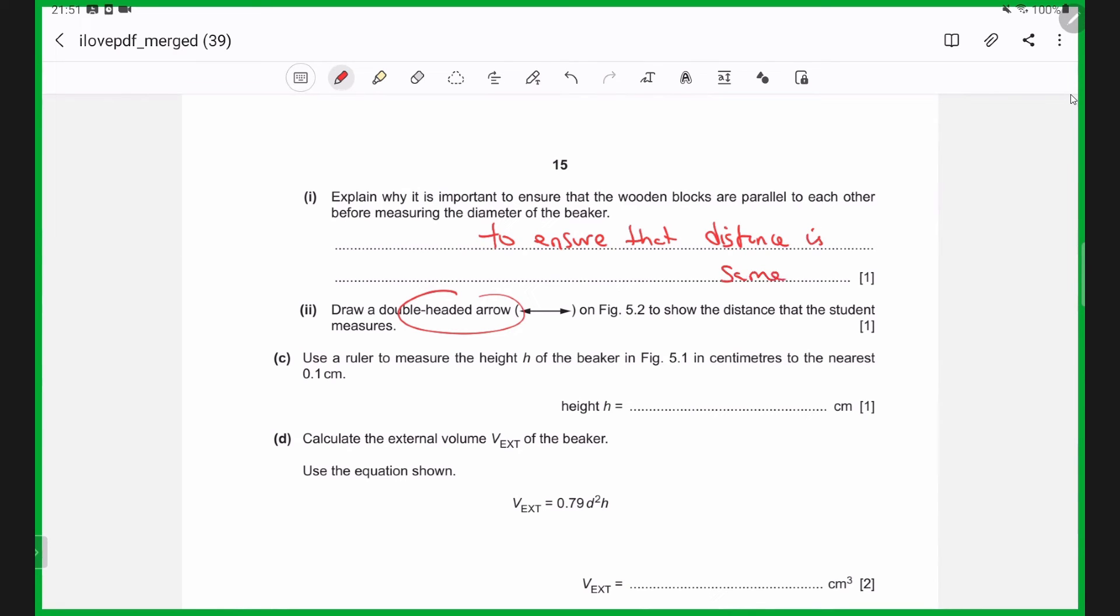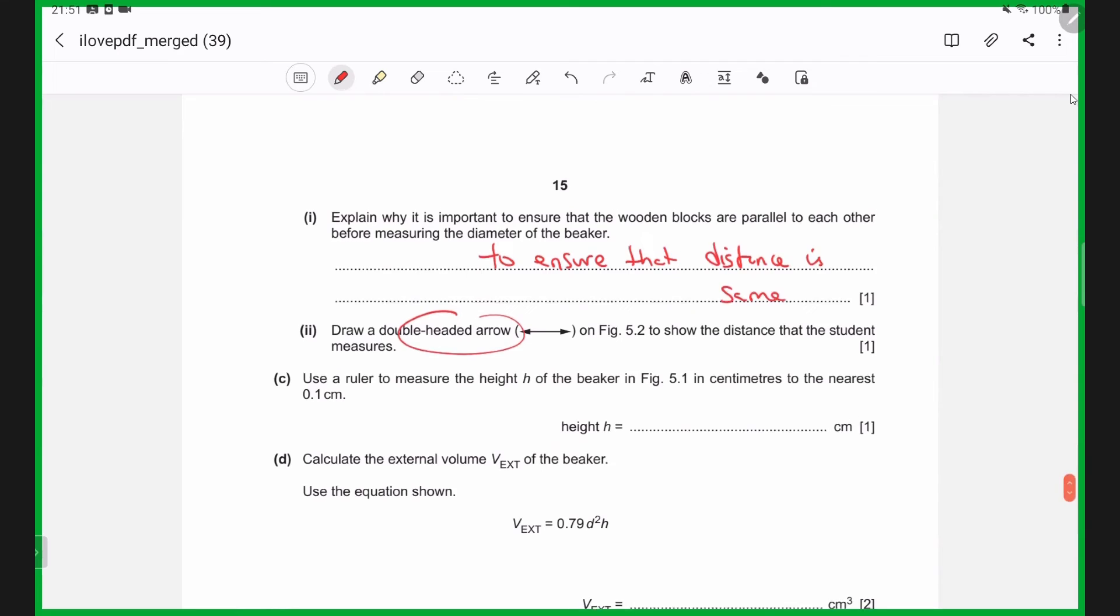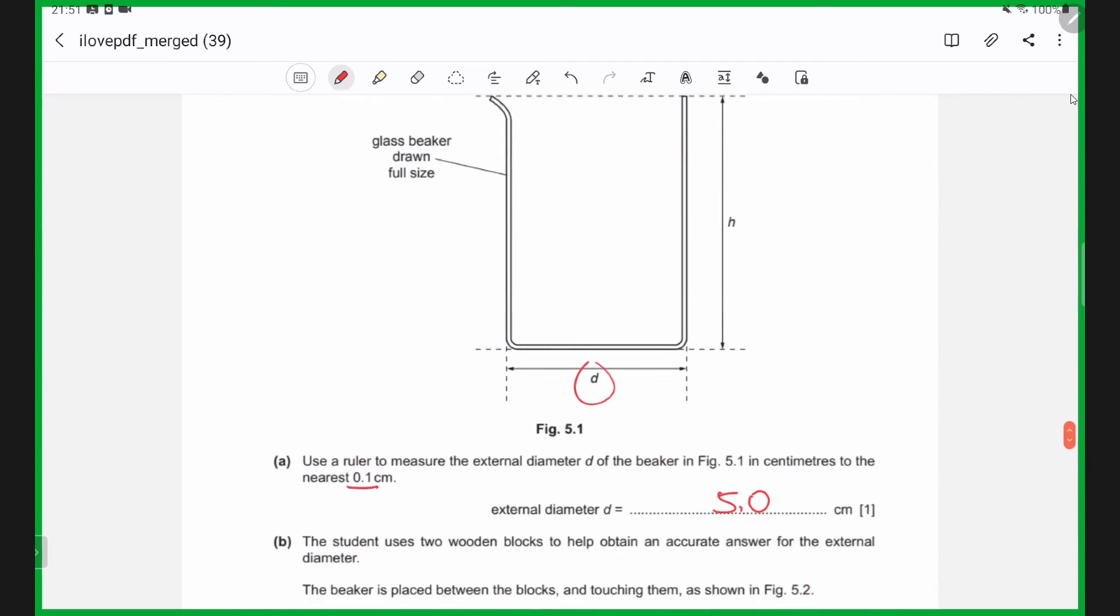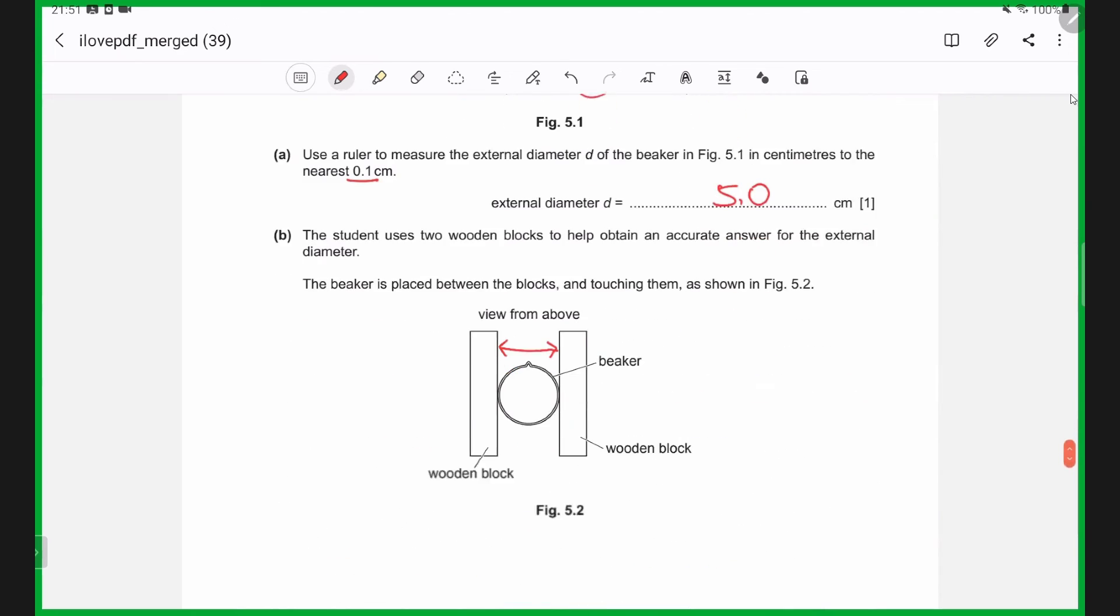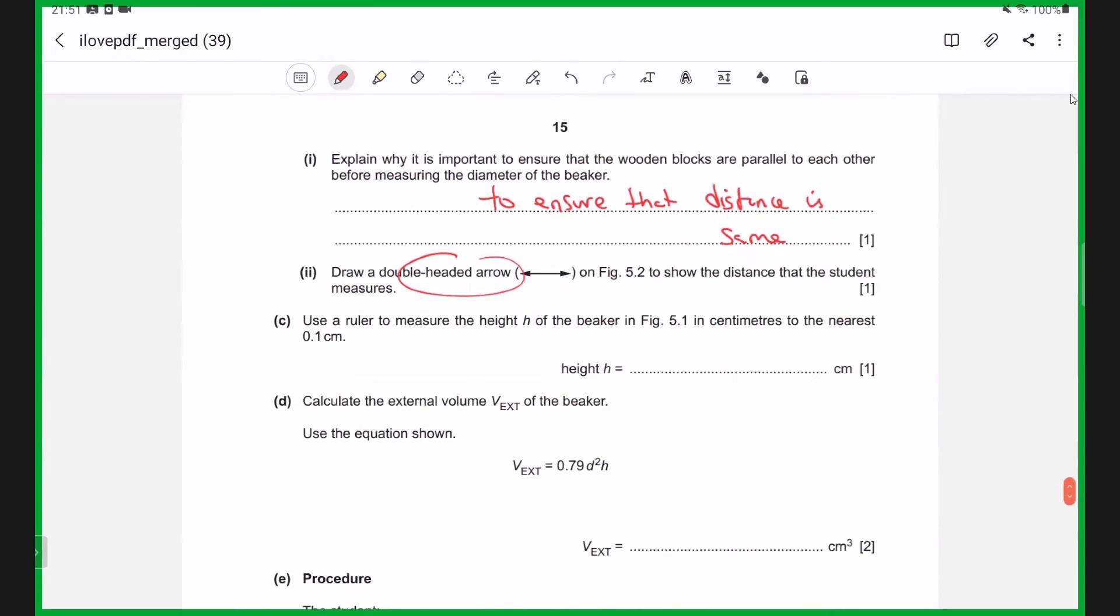And the height, of course, we're going to measure h right here using our ruler, which should give us around 7.2, as it's stated to 0.1, so you need the decimal place, one decimal place, 7.2.